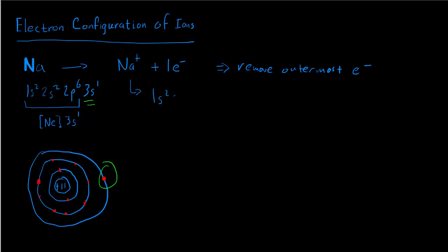If we remove that electron, the electron configuration would be 1s2, 2s2, 2p6, and then we might write 3s0 just to remind us that we've taken an electron away. But usually we omit this part. What you notice is that the electron configuration of the sodium cation is the same electron configuration as neon.